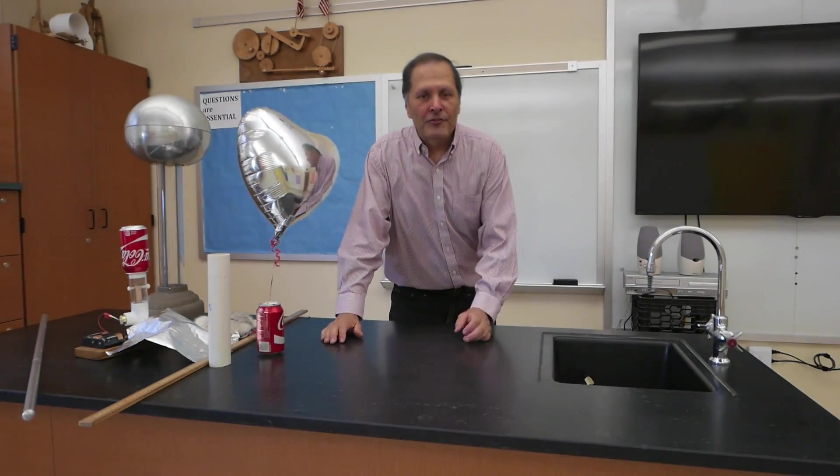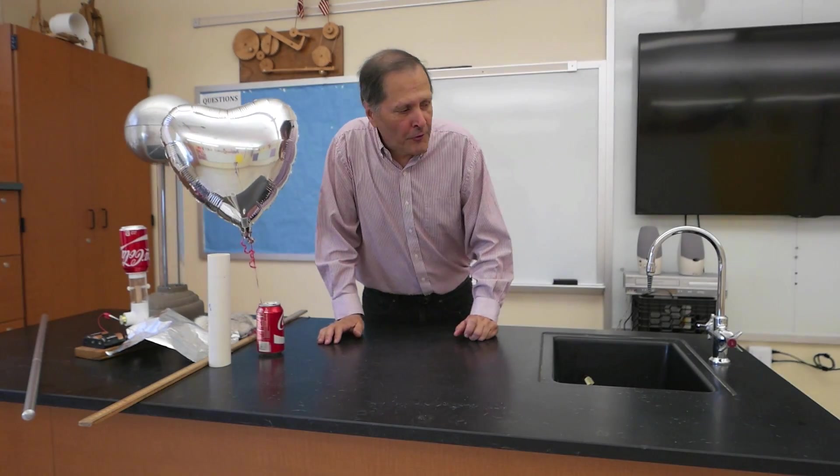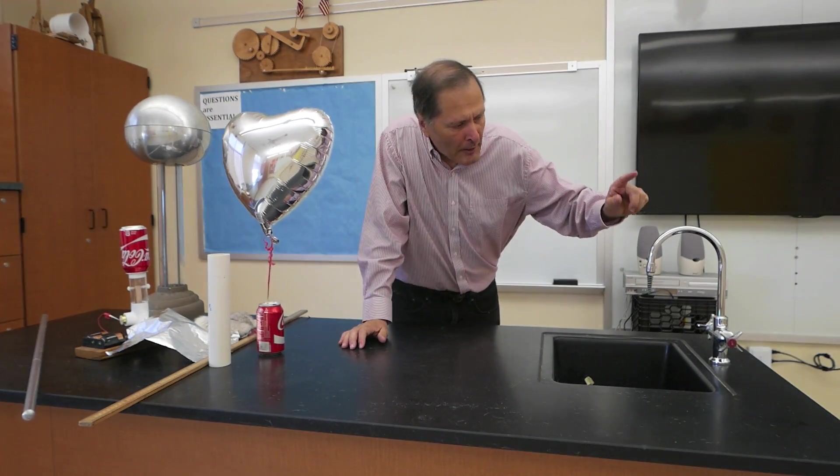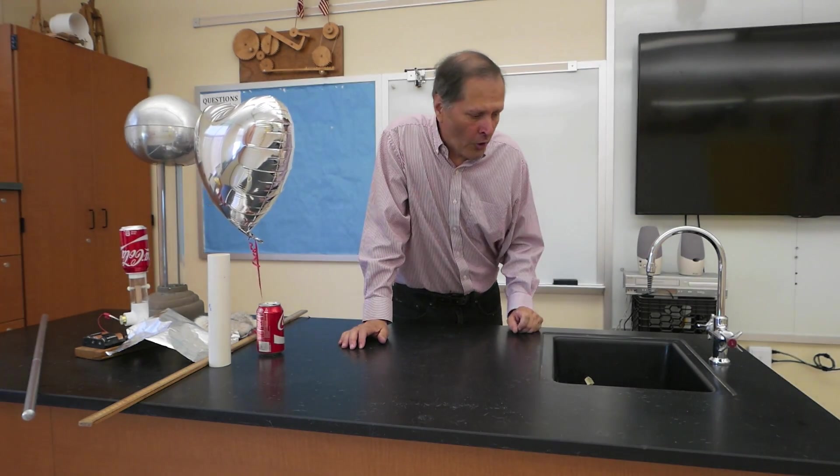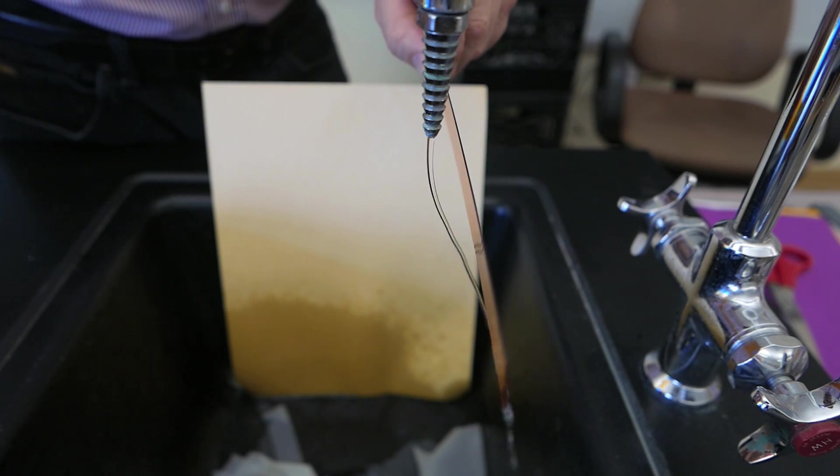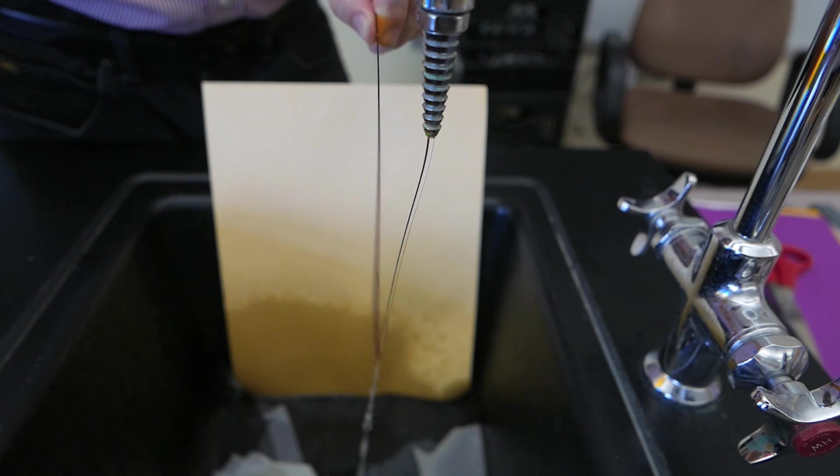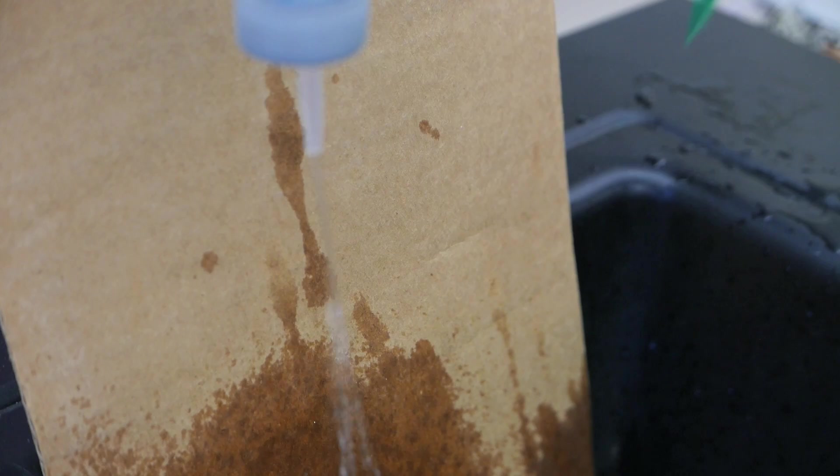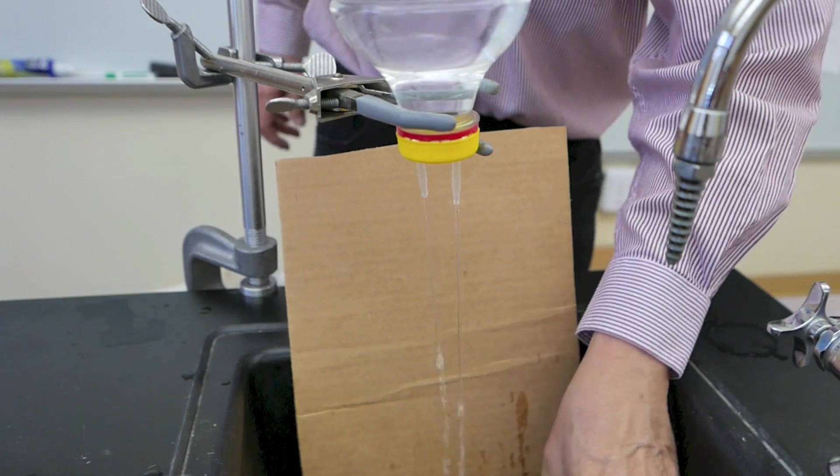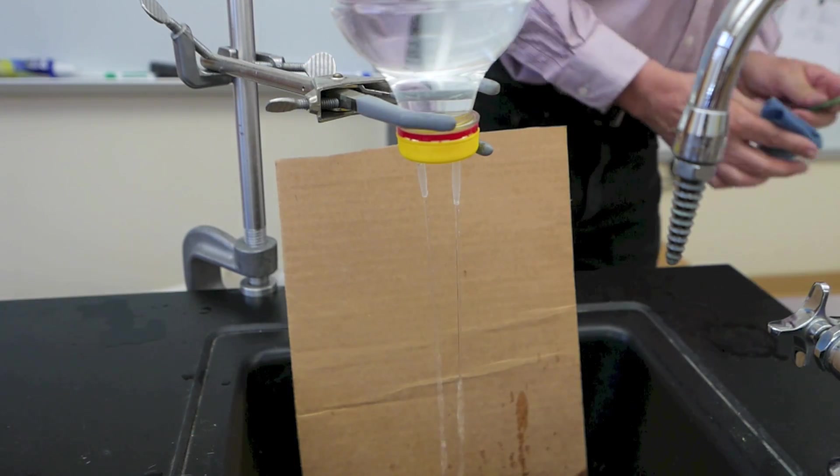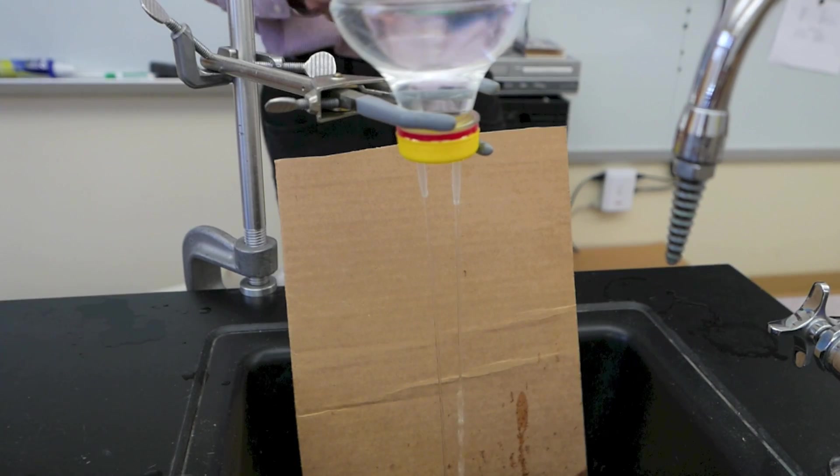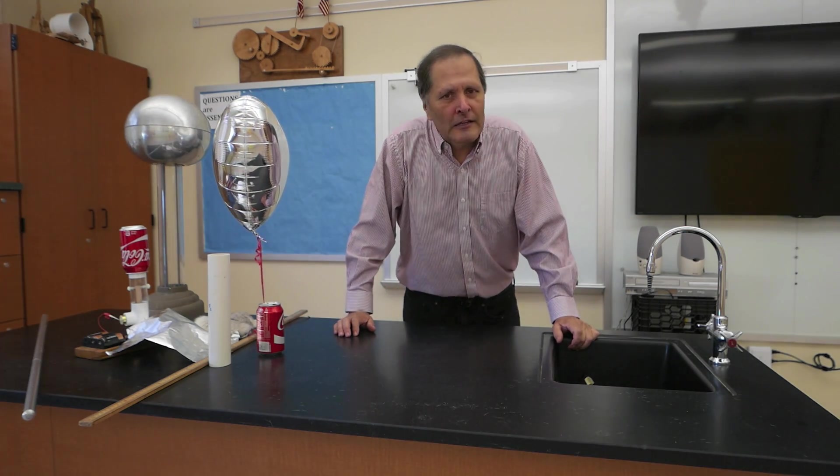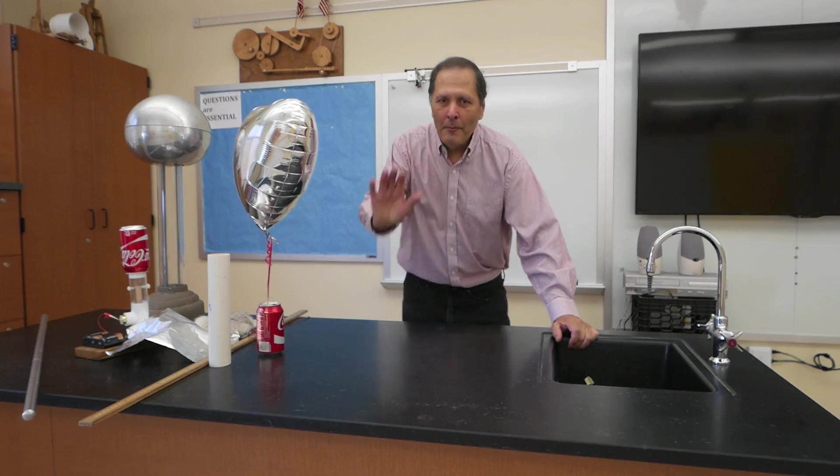Well I hope you enjoyed these demonstrations and I have more static electricity coming up in the future. One in particular is the bending of a stream of water using a static charge. Now here's the standard demonstration, but I'd like to try some variations. For example, how can we get the stream to be repelled rather than attracted? And what would happen with two streams rather than just one? At this point I'd like to thank you for stopping in and come back and see me again.